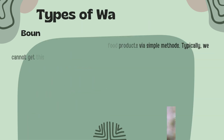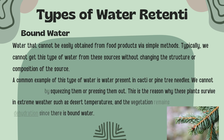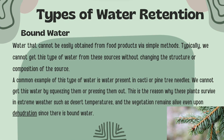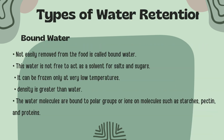Bound water is water that cannot be easily obtained from food products via simple methods. We cannot get this type of water from these sources without changing the structure or composition of the source. A common example of this type of water is water present in cacti or pine tree needles. We cannot get this water by squeezing or pressing them. This is the reason why these plants survive in extreme weather such as desert temperatures, and the vegetation remains alive even upon dehydration since there is bound water.